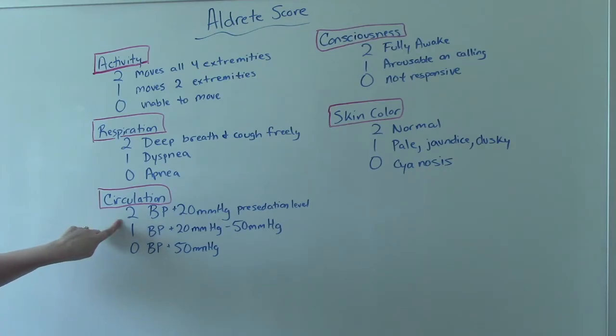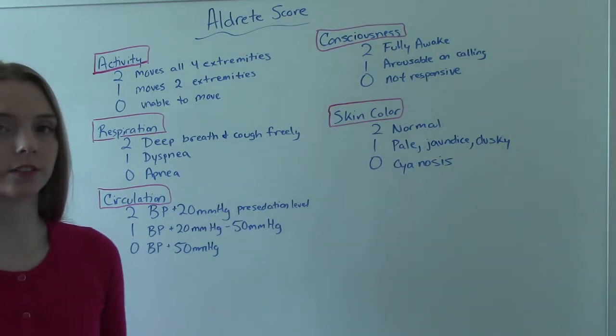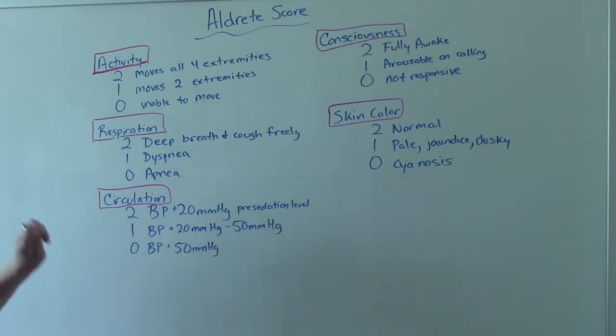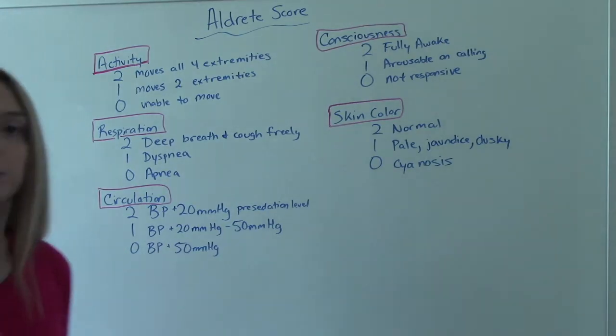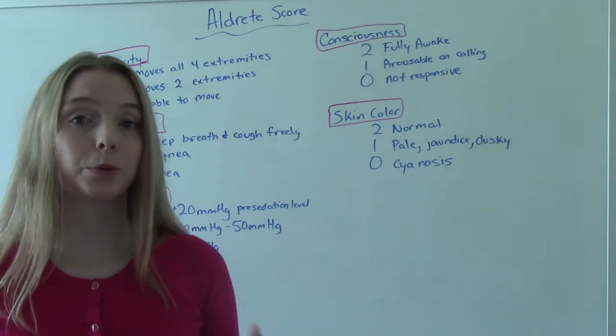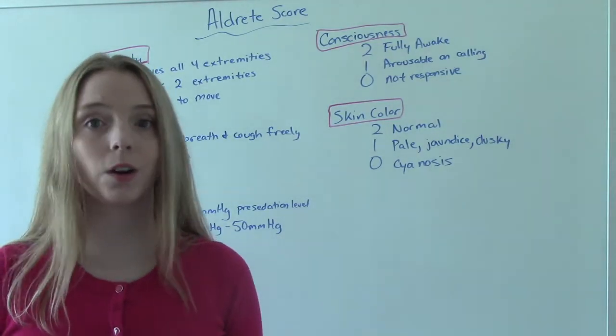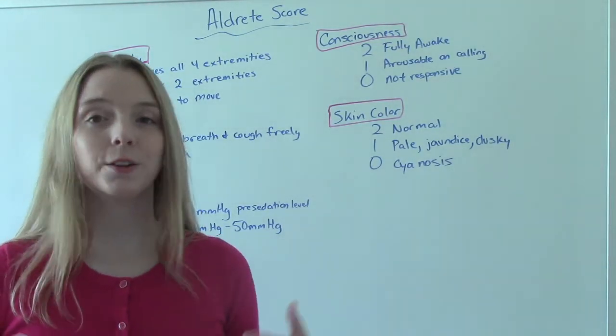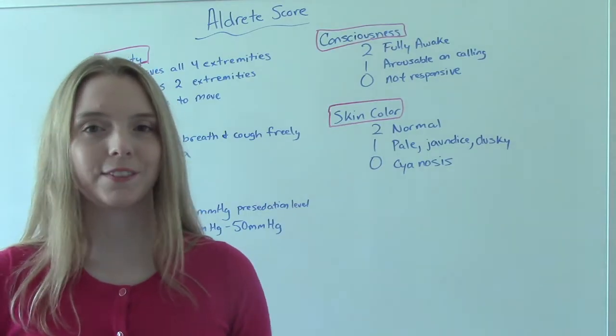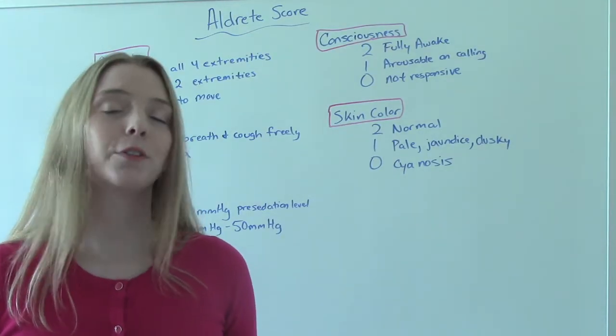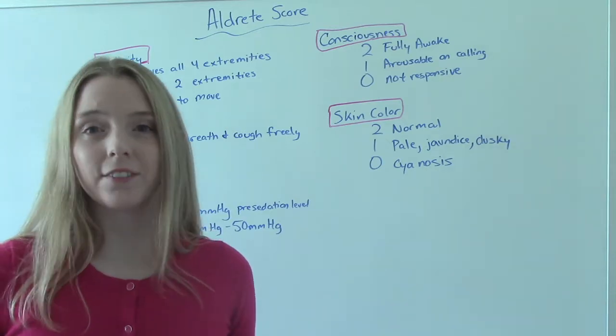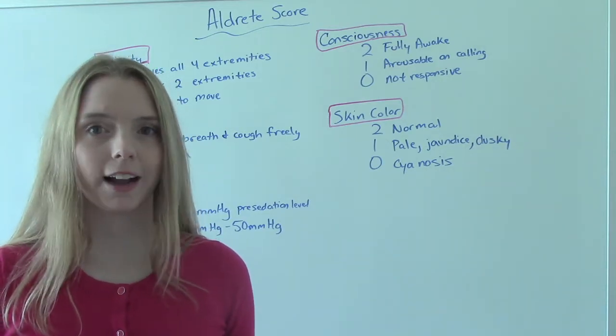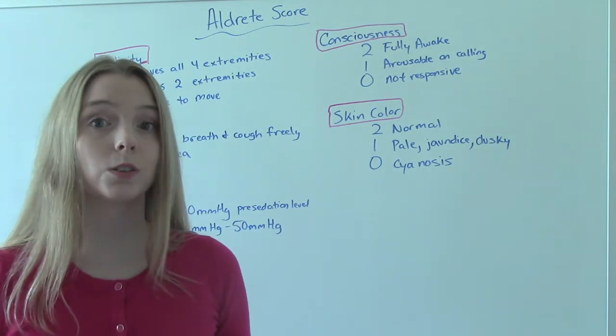Circulation. So your blood pressure needs to be 20 higher than it was pre-sedation. You get a 2. Between 20 and 50, you get a 1. And then 50 and higher, you get 0. So we want your blood pressure to stabilize and be your pre-sedation, pre-anesthesia levels. So if you were normal to start off with, you should hopefully be normal by the time you leave the PACU. If your blood pressure was elevated before you started, it's probably going to be elevated after you leave the PACU. So it's probably not going to change, but that's a good thing. It should be what's normal for the patient.